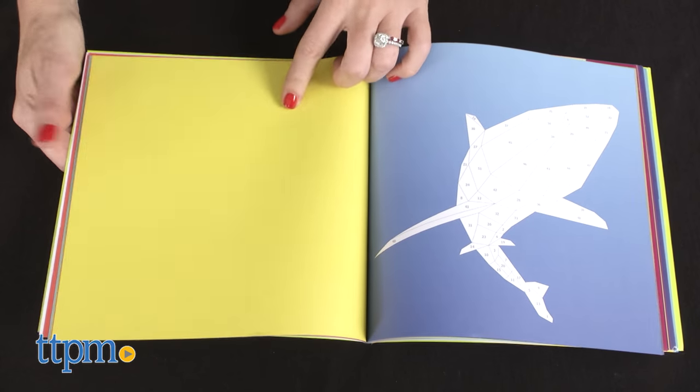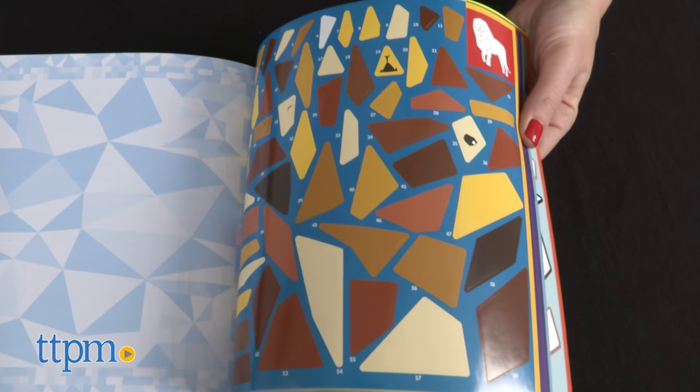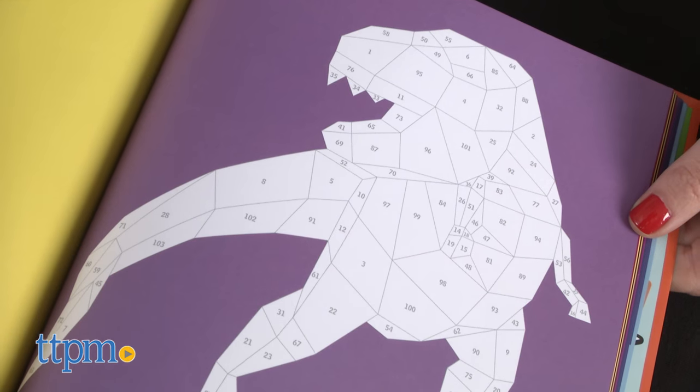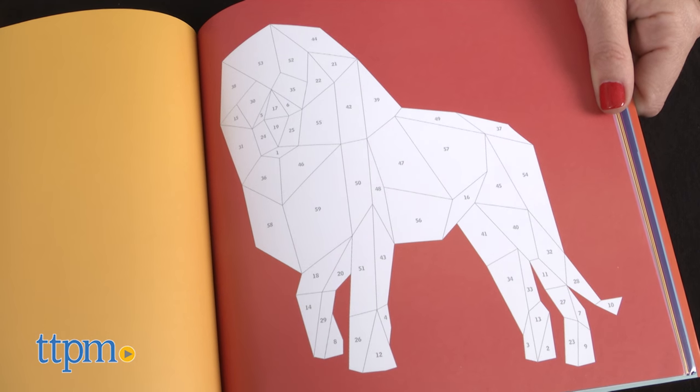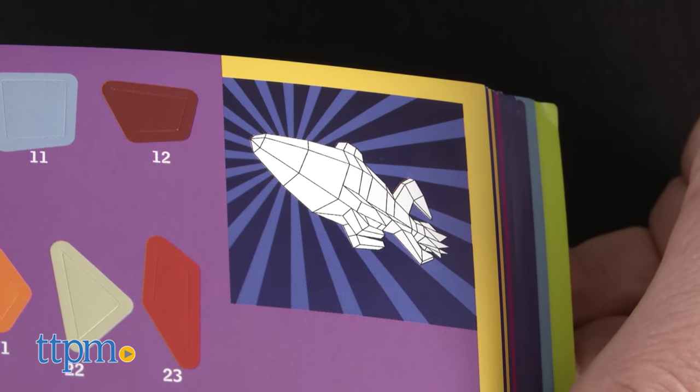The book includes 10 illustrated templates printed on card stock and 10 pages of stickers to fill in the pictures. The pictures include a castle, dinosaurs, lion, rabbit, and more and are designed with shapes that create a 3D effect.